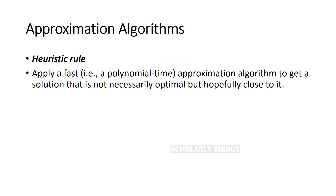That is when the concept of approximation comes in. The idea is to solve the optimization problems approximately using a fast algorithm — fast referring to polynomial time. We need to find a solution as close to the optimal solution as possible. Here a heuristic rule is applied, which is a common sense rule drawn from experience rather than mathematical proofs.